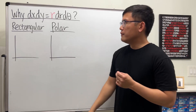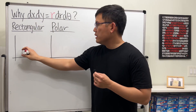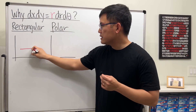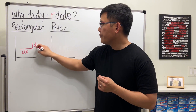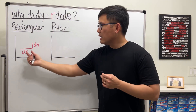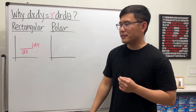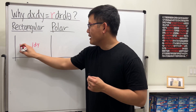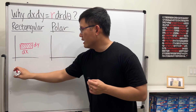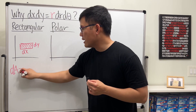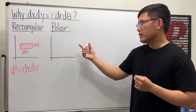First, let's look at the rectangular case when we have dx dy. dx is just a small change in x, and dy is just a small change in y. They are meant to be very, very small, but if drawn too small nobody can see it. When we multiply them together we get a small area element, so that's dA.